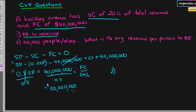Now that we've figured out the breakeven revenue, if 40,000 people come to the arena for each game and a season is 82 games, what is the average revenue per person needed for the company to breakeven?